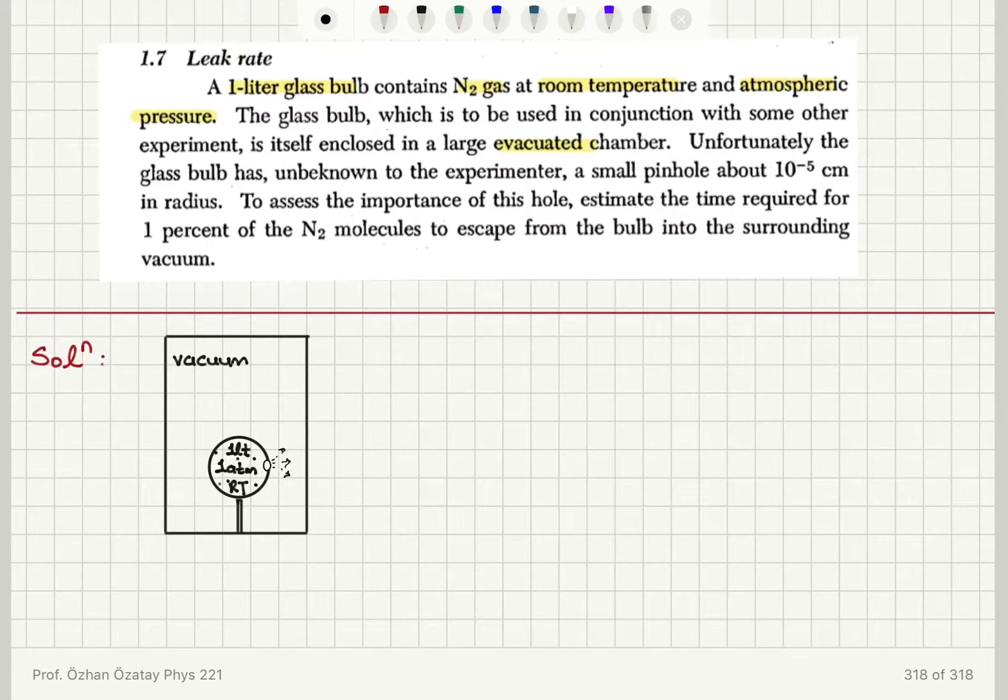Unfortunately, the glass bulb has, unbeknown to the experimenter, a small pinhole about 10 to minus 5 cm in radius. To assess the importance of this pinhole, estimate the time required for 1% of nitrogen molecules to escape from the bulb into the surrounding vacuum.